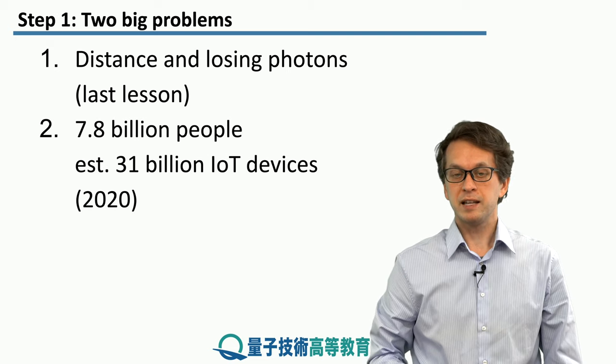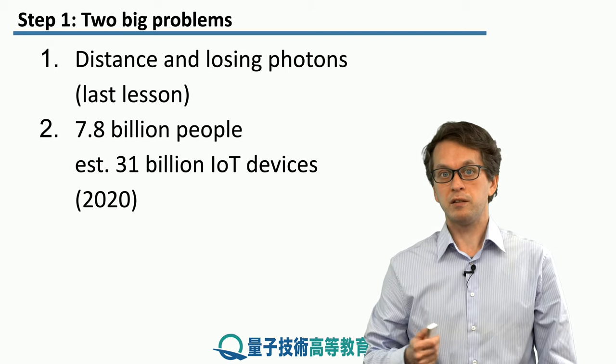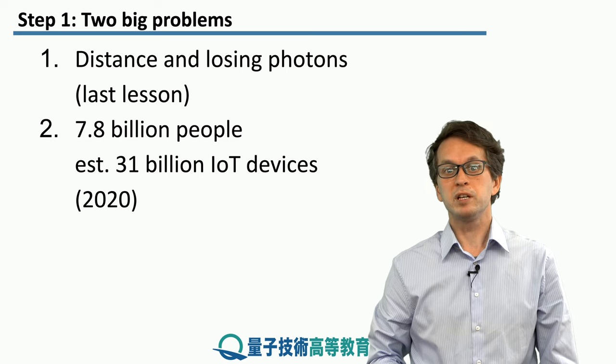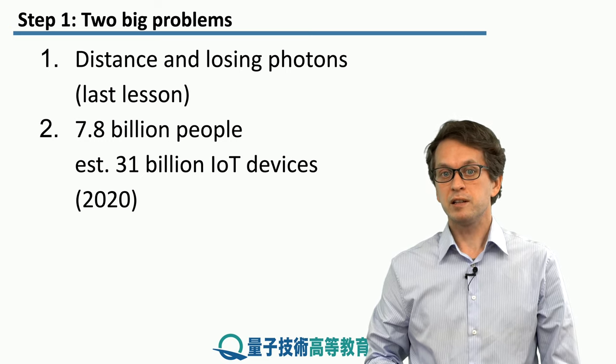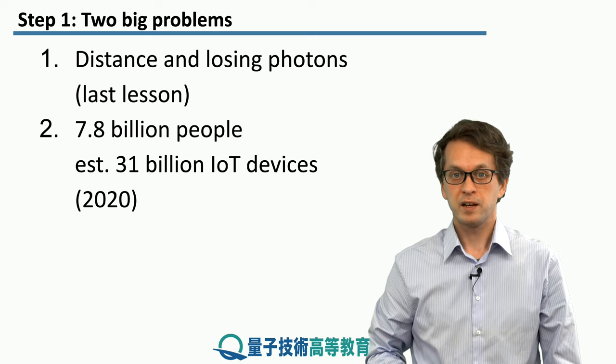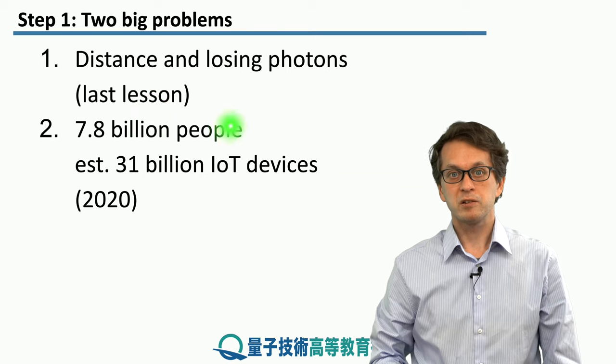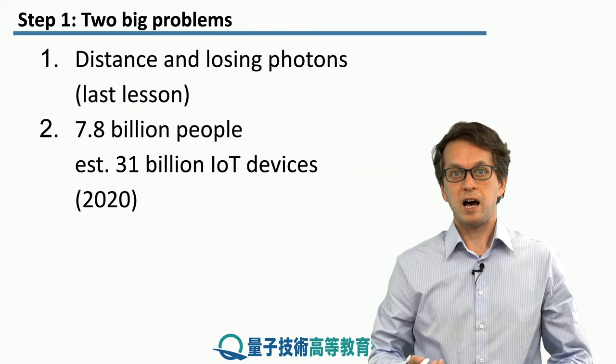There's also another problem and that's the number of devices that are connected to the network. So currently there are 7.8 billion people and an estimated 31 billion Internet of Things devices. That means that somehow all of these devices can communicate with each other. How is that achieved?